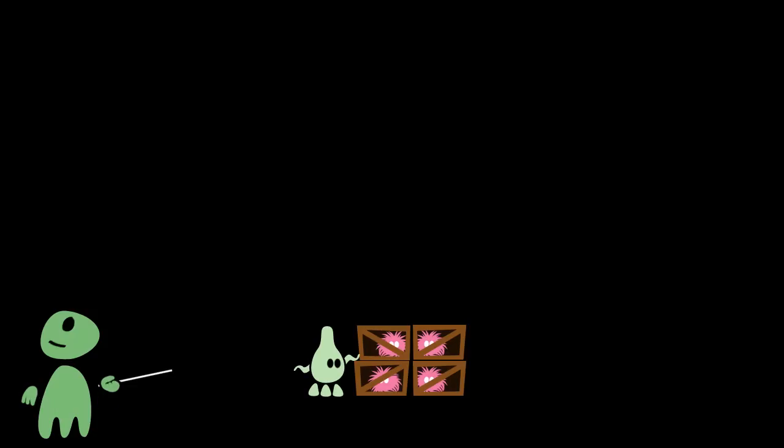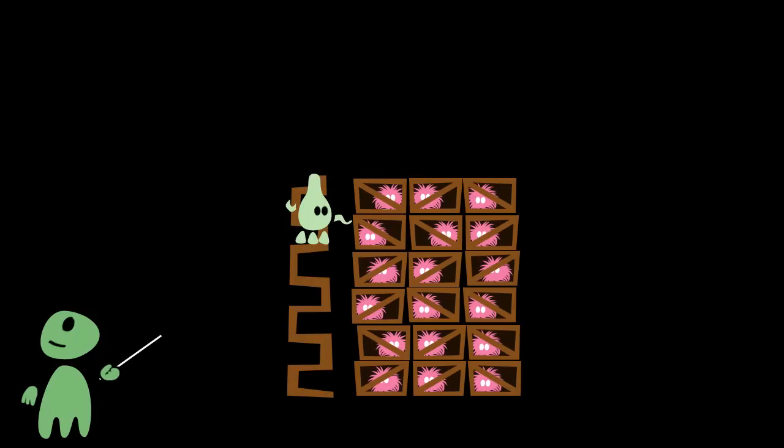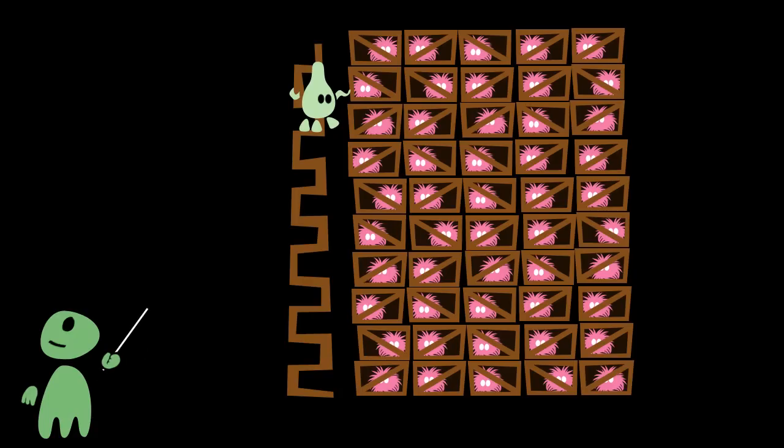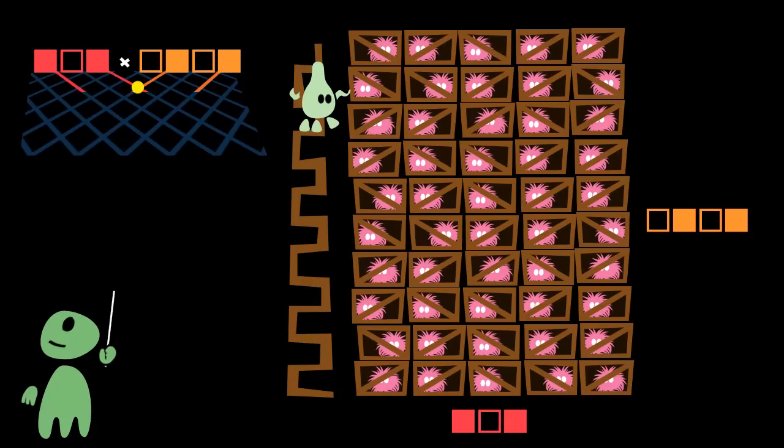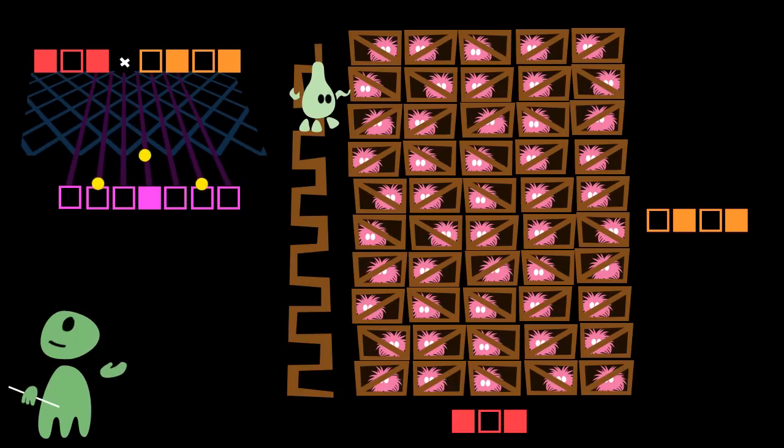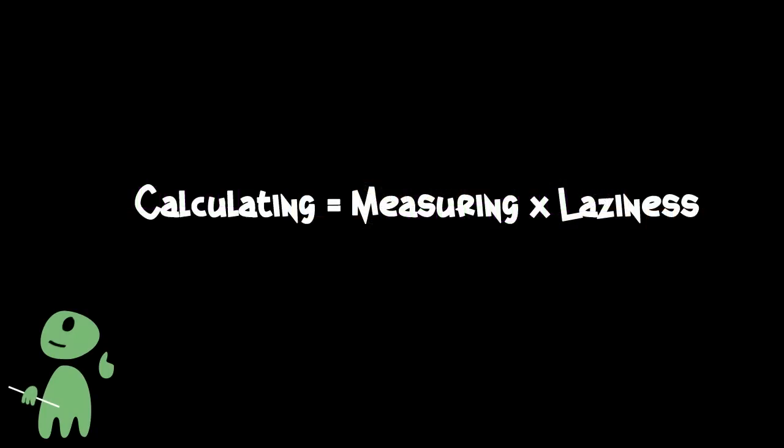Small quantities can be measured directly, but things get more complicated when the quantities are either bigger or not easy to measure. That's when calculating comes in, it's a shortcut, a way to combine available quantities to get other quantities. In other words, calculating is measuring times laziness.